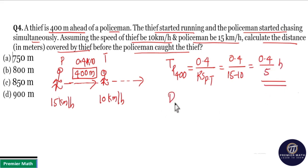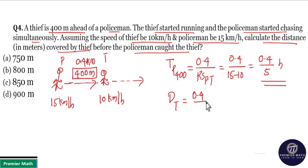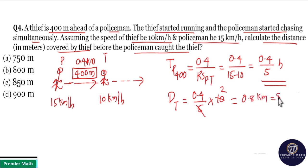Distance travelled by the thief equals the running time of the thief multiplied by the speed of the thief. The running time is 0.4 by 5, and the speed of thief is 10 km per hour. So distance = (0.4/5) × 10 = 0.4 × 2 = 0.8 km, which is 800 meters. Option B is the answer.